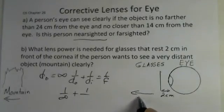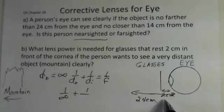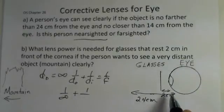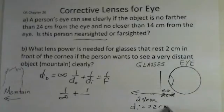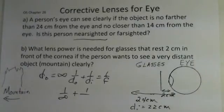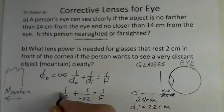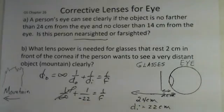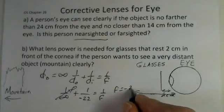So back this way, 24 centimeters is a distance to the eye. We use up 2 centimeters from the cornea to the lens. So our DI distance is going to be 22 centimeters. And the image is to the left of the glasses, the lens. So by convention, that becomes a negative. 1 divided by infinity is 0. So 1 over minus 22 has to equal 1 over F. So F is minus 22 centimeters.